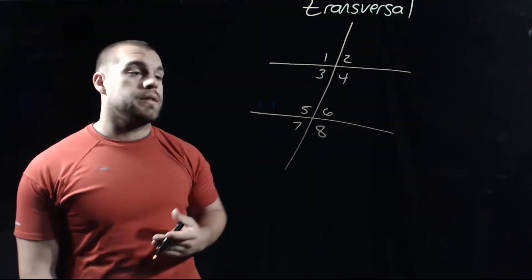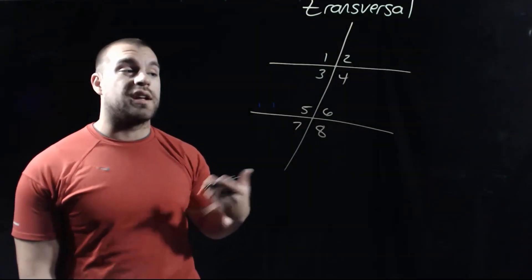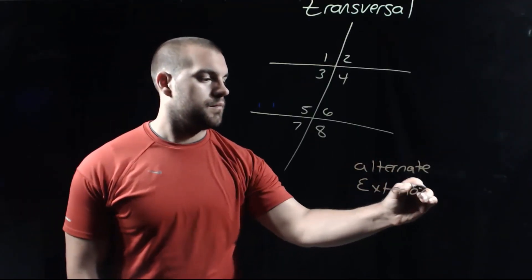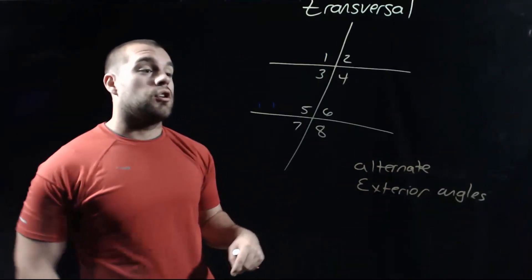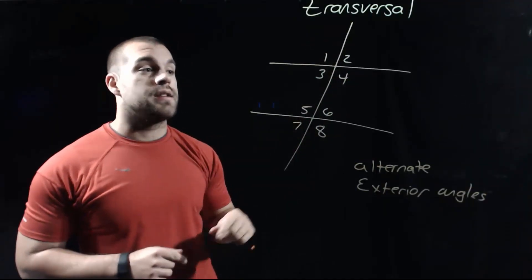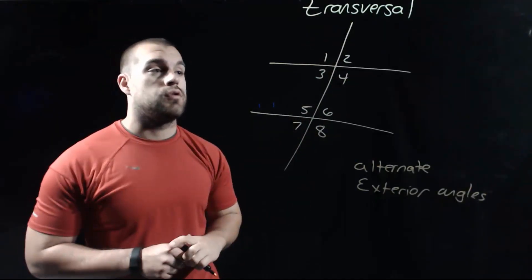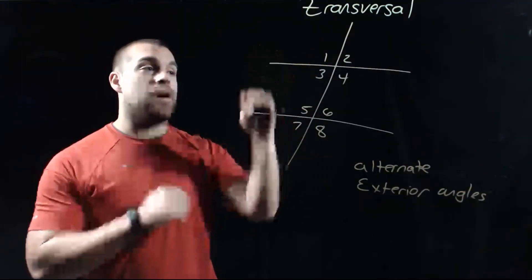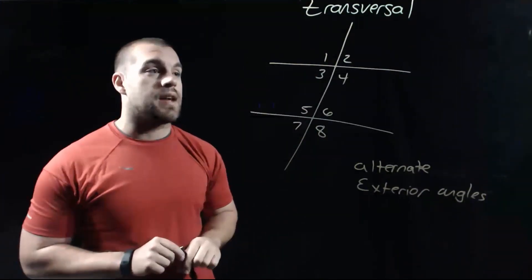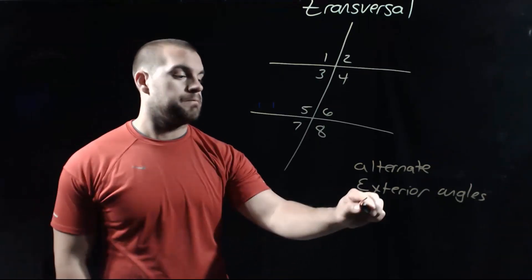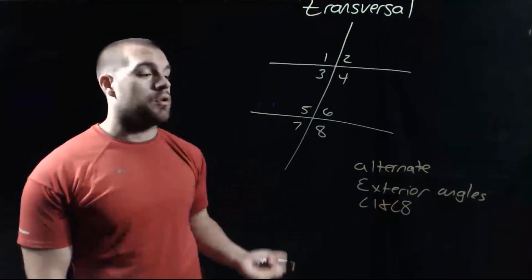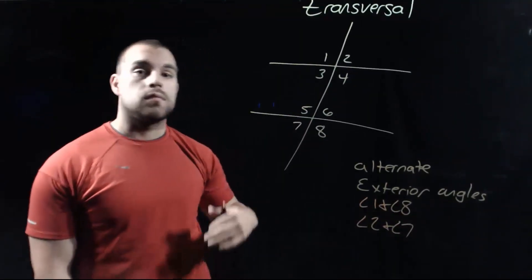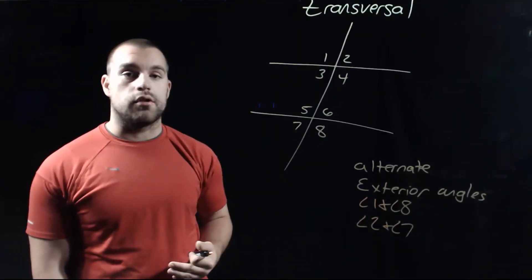Similar to alternate interior angles, we've also got alternate exterior angles. These are angles that are going to be outside of our two original lines and on opposite sides of the transversal. Angle one and angle eight are on the outside and on opposite sides of our transversal — that's an example of alternate exterior angles. We've also got angle two and angle seven as another example of alternate exterior angles.